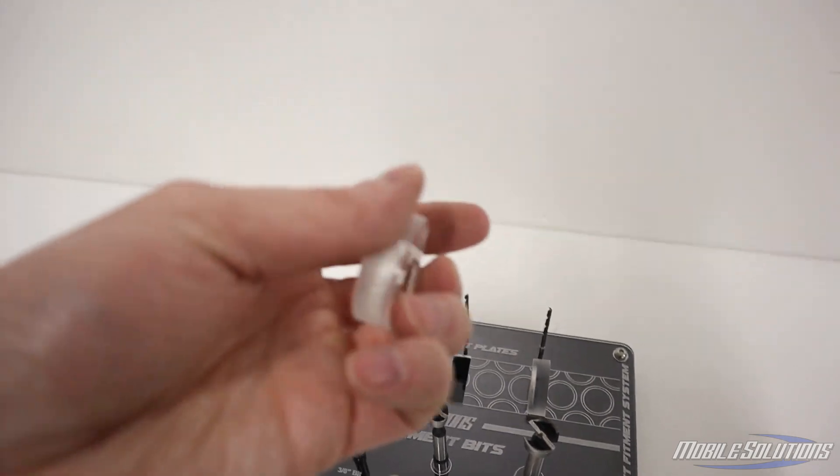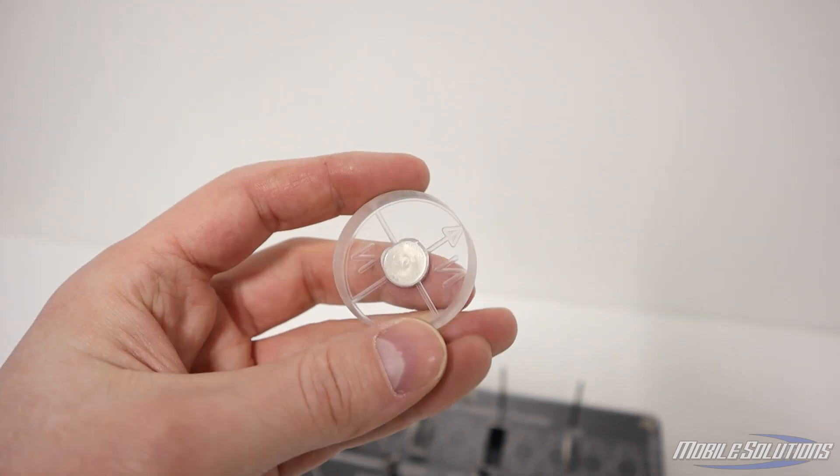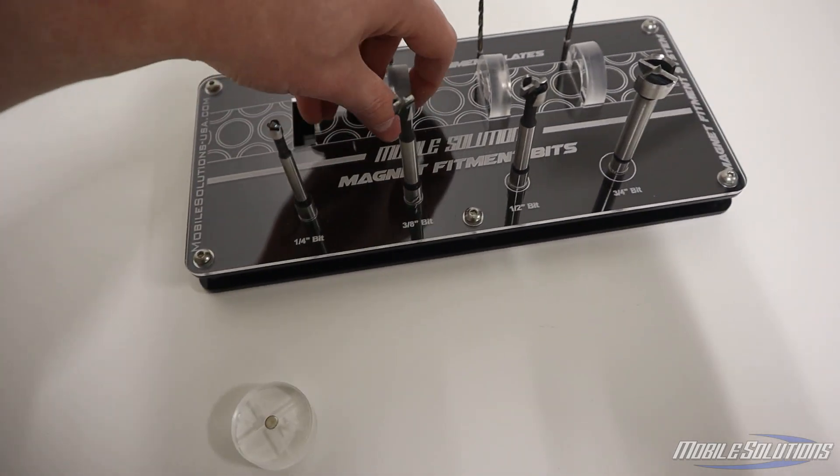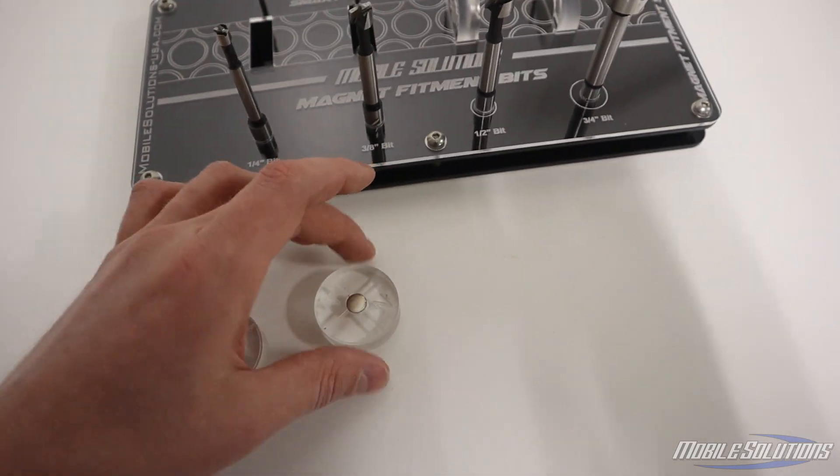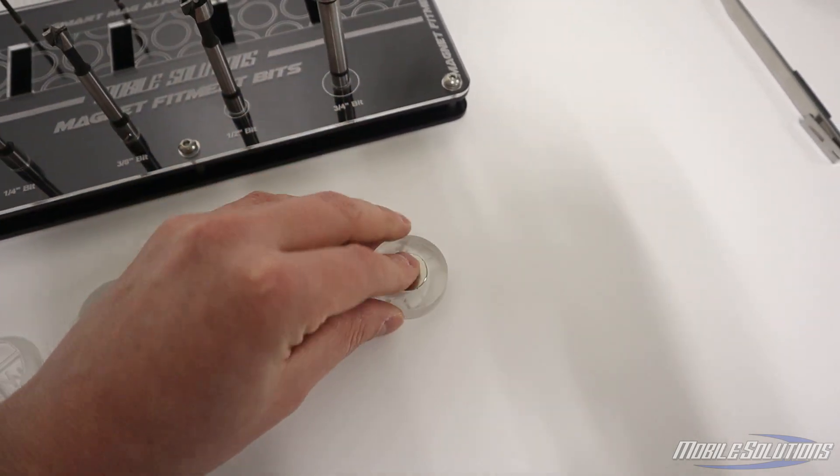Next up are the smart mag alignment plates, and each of these has a different sized magnet incorporated into it. So this is a quarter inch magnet, a three-eighths inch magnet, a half inch magnet, and a three-quarter inch magnet.